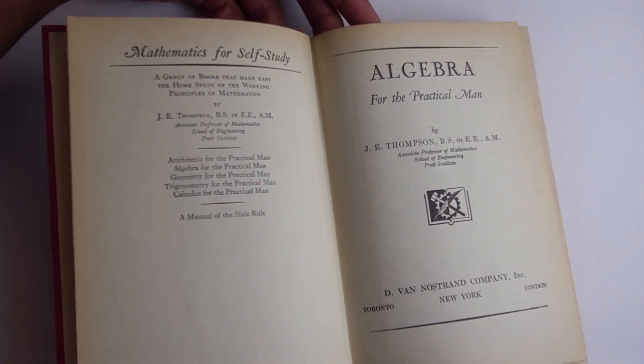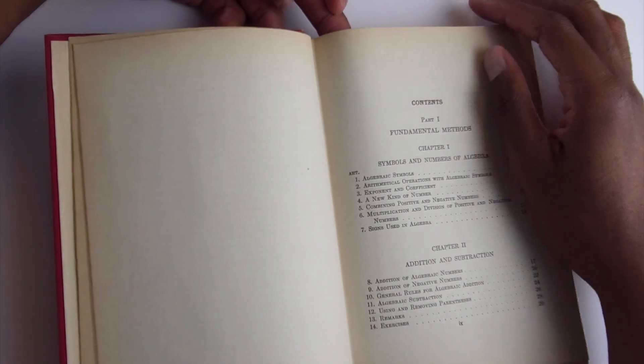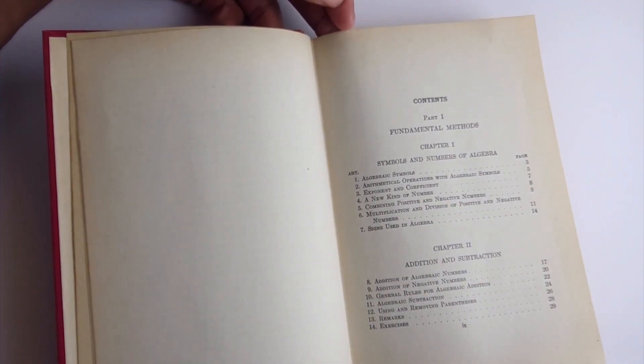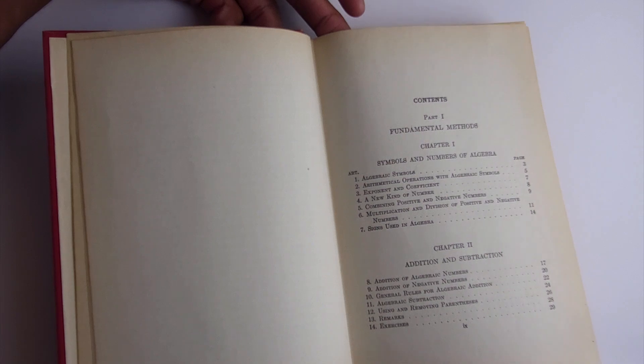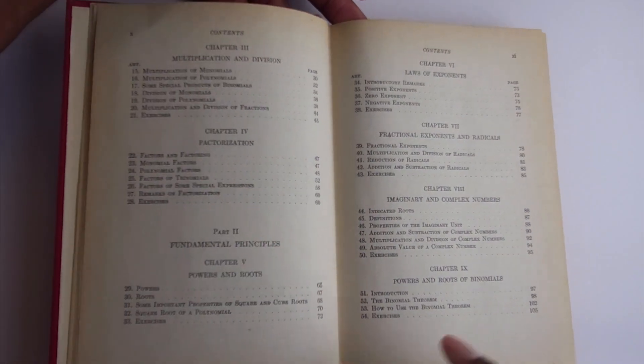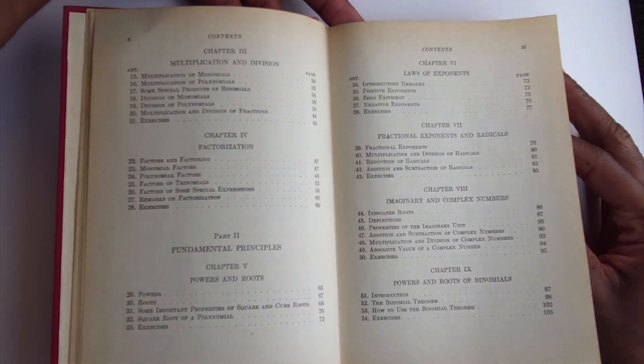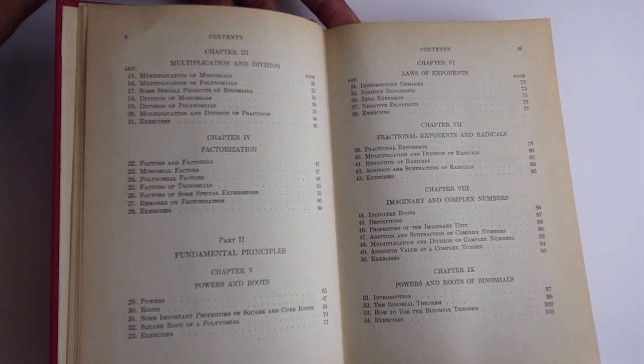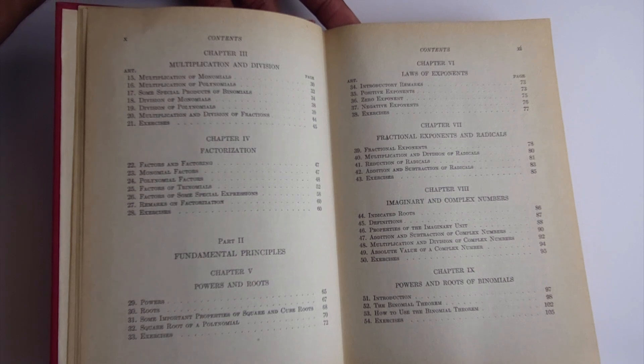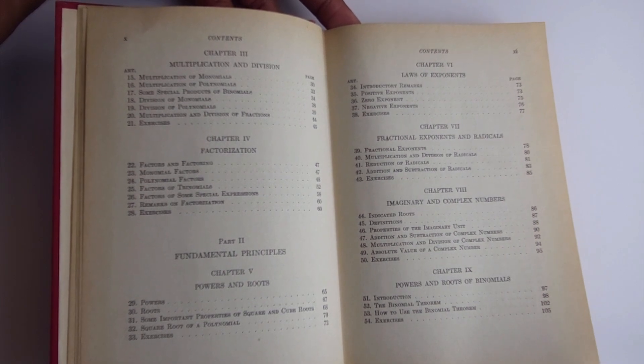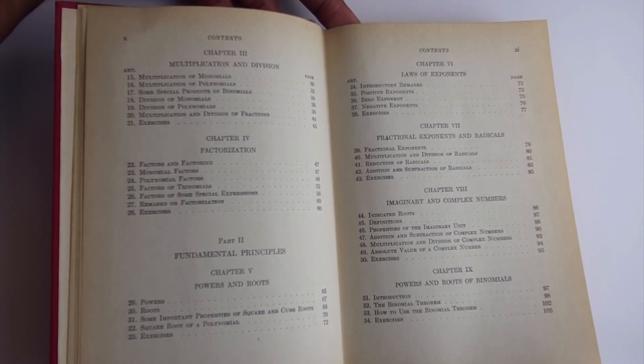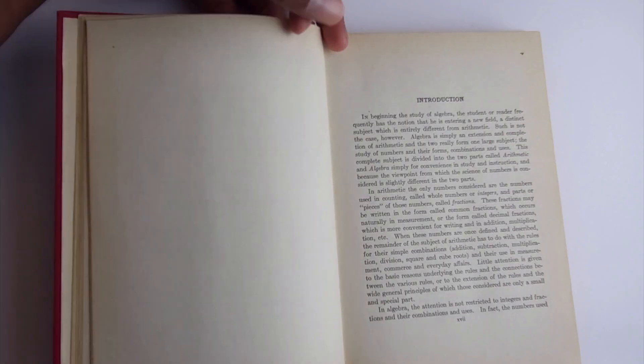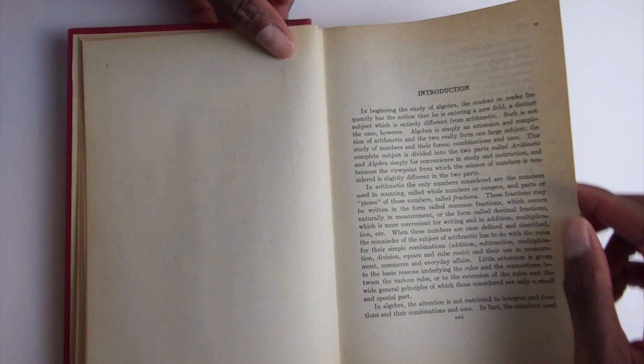So here's Algebra for the Practical Man and here's the table of contents. I will say if you want to pause the video and look and see what you actually go over in this book. It covers a lot of great content. It definitely goes over everything you'll need to understand algebra in a very logical and methodical way that's very down to earth.